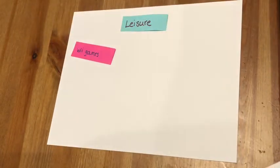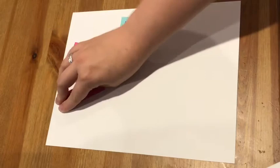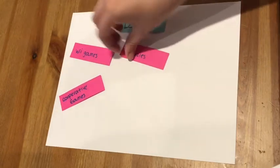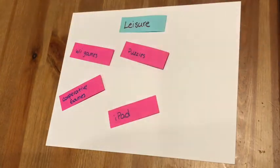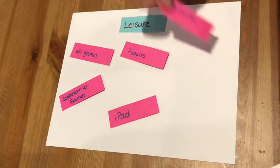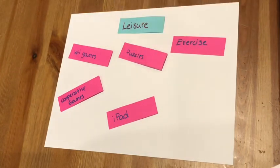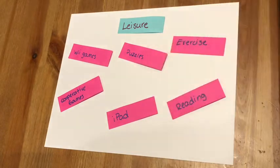Within leisure skills we'll do many different things. We'll play Wii games, cooperative games, puzzles, different games and activities on the iPads, try different kinds of exercise, and read different books for fun.